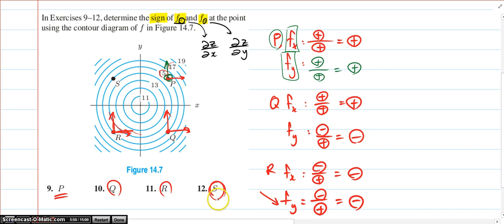And S here, when x is increasing, the z value is getting smaller, so it will be like this, which is negative. And fy, when y gets bigger, z value is getting bigger and bigger, so it's positive and positive, which is positive.